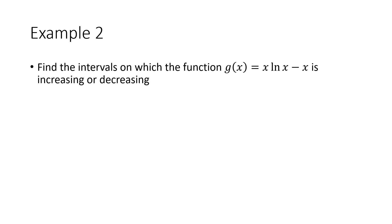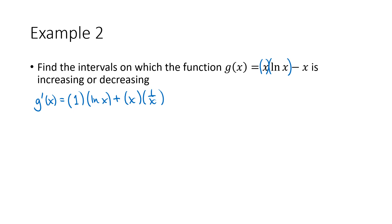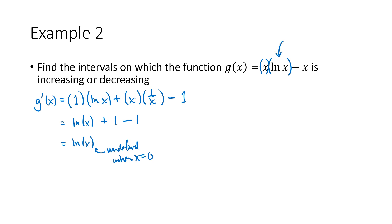Let's do another one. This time we have the function g of x equals x ln x minus x. Where is this function increasing or decreasing? We'll look for where g prime of x is positive or negative. For x ln x, we use the product rule: the derivative of x is 1 times ln x, plus x times the derivative of ln x which is 1 over x, minus the derivative of x which is 1. That simplifies to ln x plus 1 minus 1, which is just the natural log of x. The natural log of x is undefined when x equals 0, but x equals 0 is not even in the domain of the original function. Numbers less than 0 are also not in the domain, since we can't take the log of a negative number.